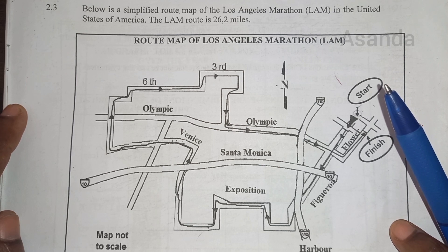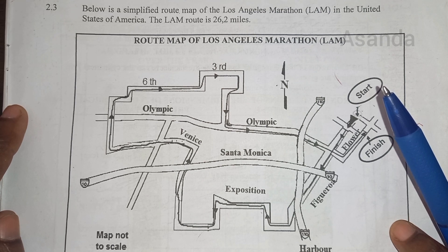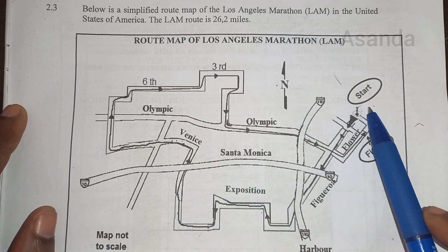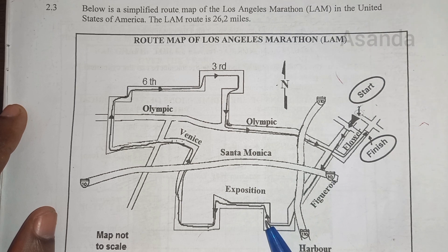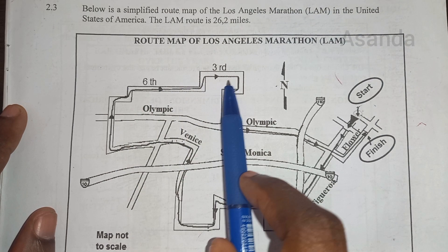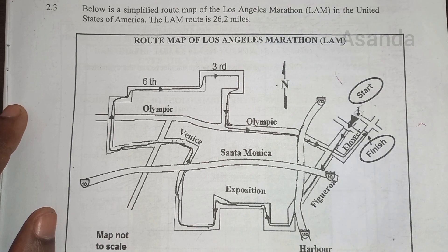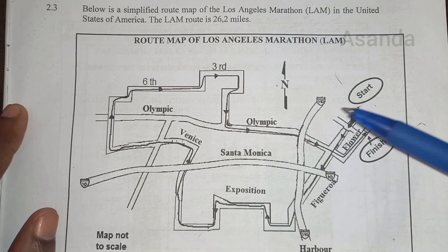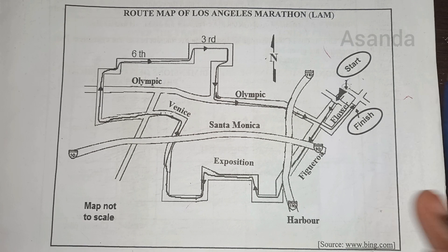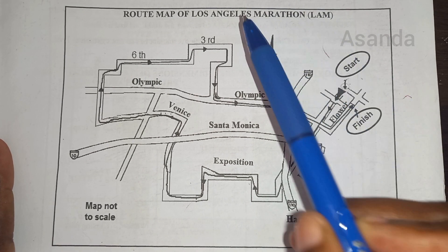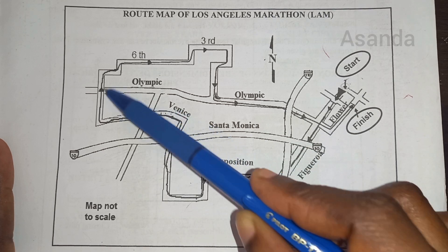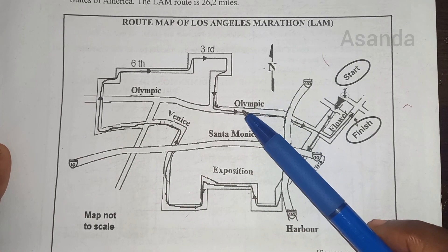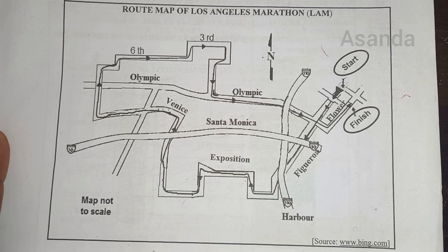The LA Marathon route is 20.2 miles. What is a route map? A route map is a map that shows the actual path that a person will travel, from start to finish, showing the direction. This one is called a route map because it shows exactly where the marathon starts, where it goes, and where it ends.